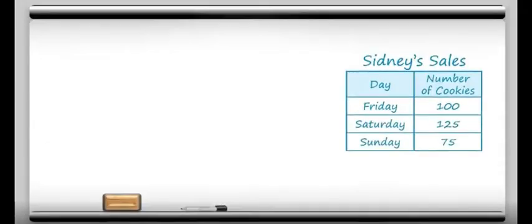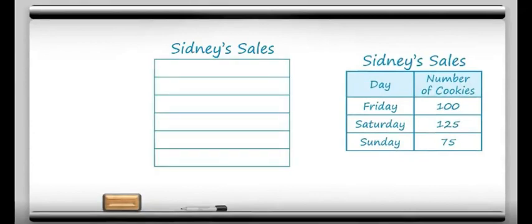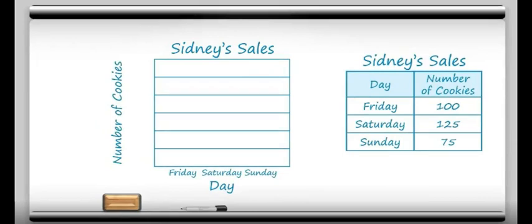Now let's take that data and make a bar graph. Same kind of thing: we have our title and our graph area. Along the bottom we're going to put our categories, and along the side we're going to put the number of cookies. You can label the lines of this bar graph in ways that make sense to you. For this example, I'm going to mark the fifties and leave a spot in between — those are going to be twenty-fives.